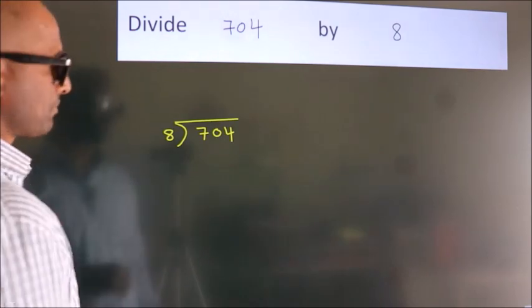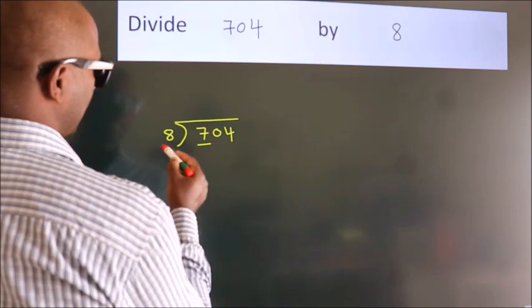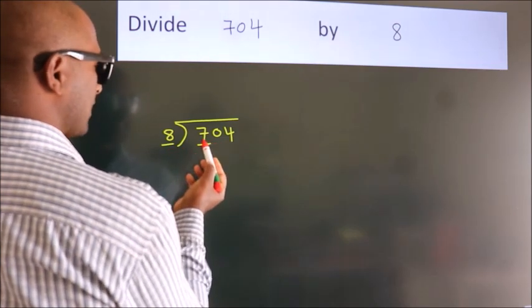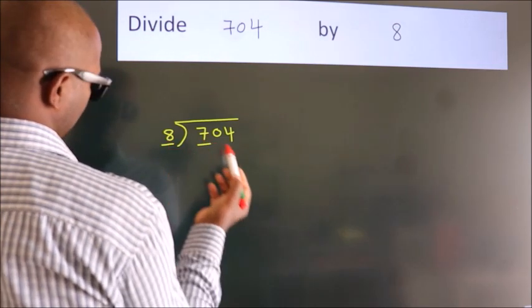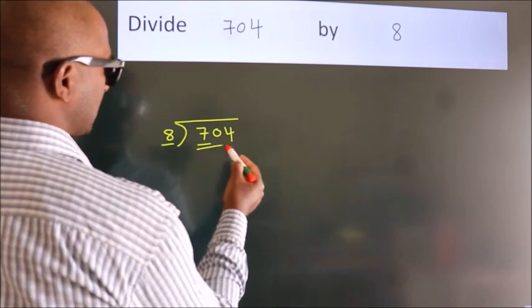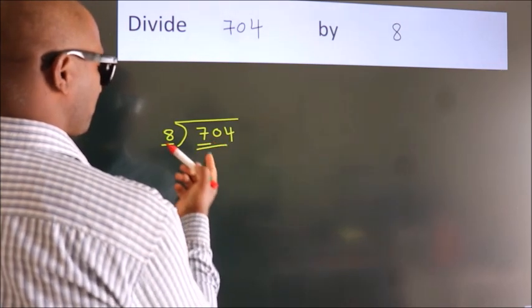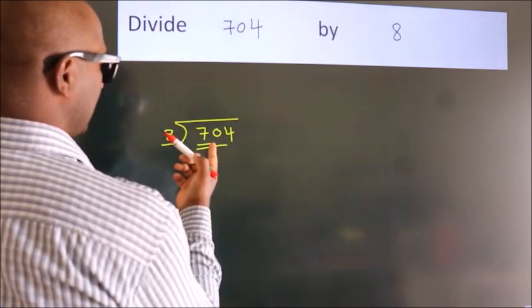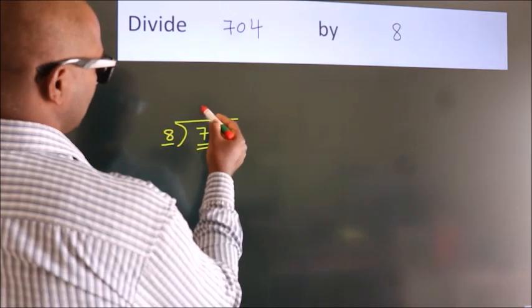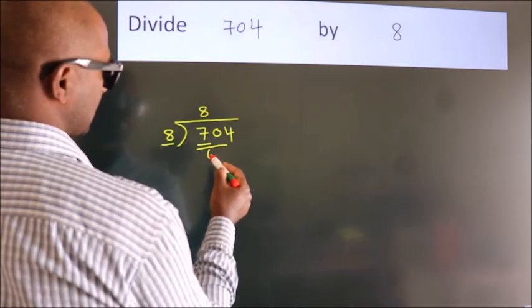Next, here we have 7, here 8. 7 is smaller than 8. So we should take 2 numbers, 70. A number close to 70 in the 8 table is 8 times 8, which is 64.